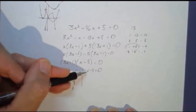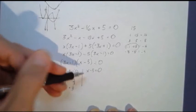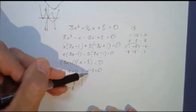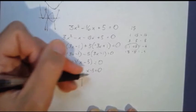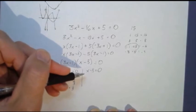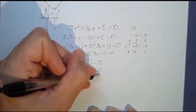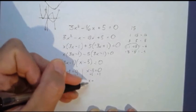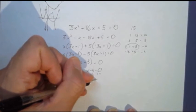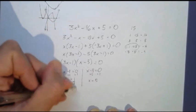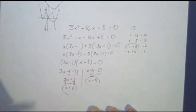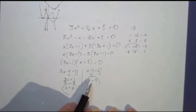For the second one, we have x minus five. This is a simpler problem. What minus five is zero? Think of adding five to both sides. So x equals five. Our two solutions are x equals one third and x equals five.